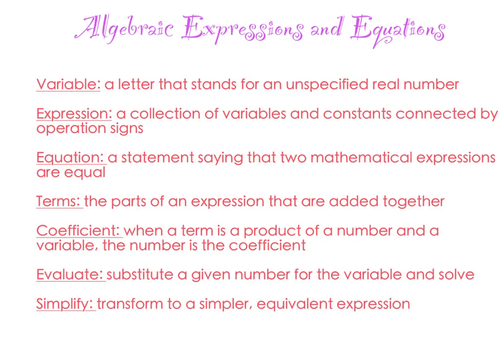Alright, here they are. The first one is variable - that's the letter you use to stand for an unspecified real number, like usually X. The next one is expression - that's a collection of variables and constants connected by operation signs, like 2X plus 7. It's an expression.